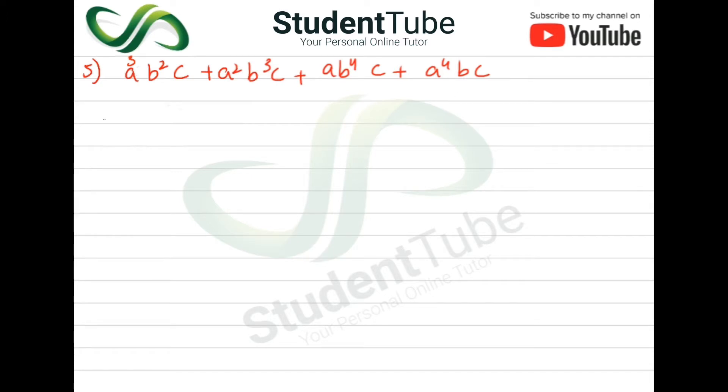Now what do we have to do here? First we are taking a², b², and c common. Then what will come inside? a³ means that the first term is cube, so a will come, and then b² is outside, then c will not come. In this way,